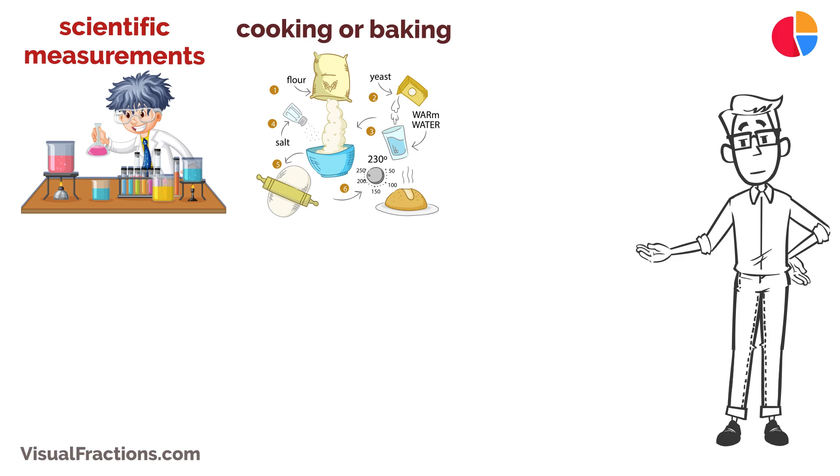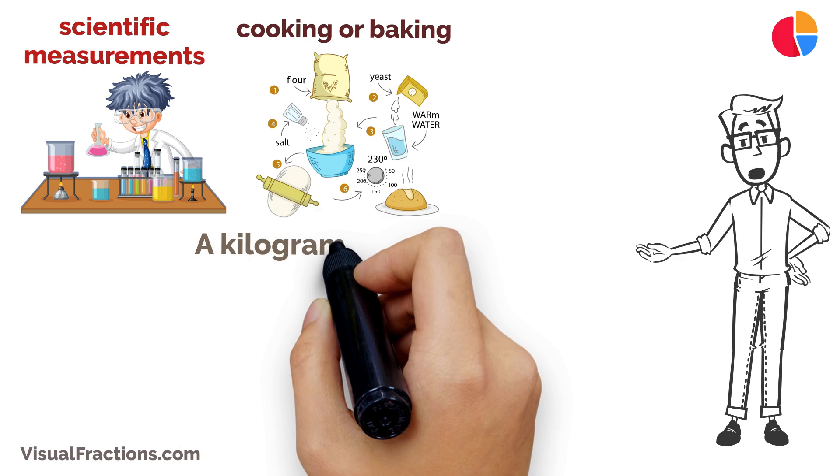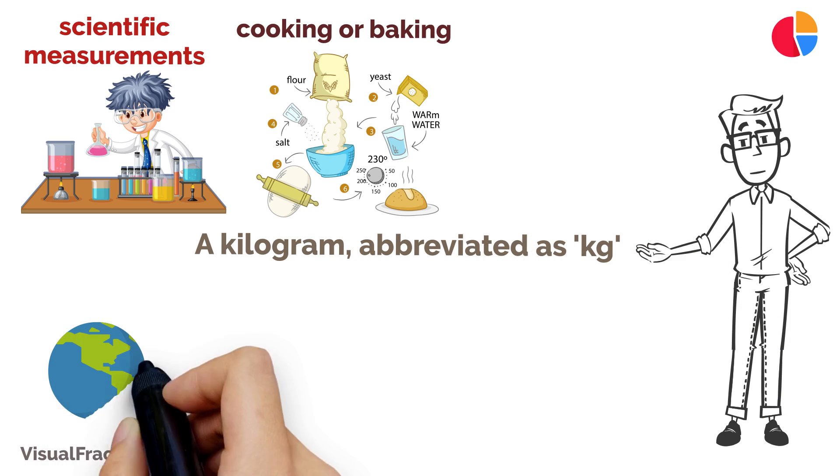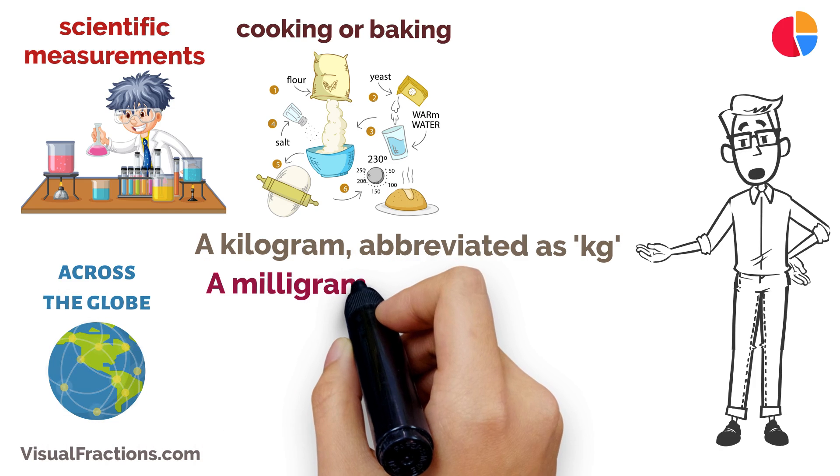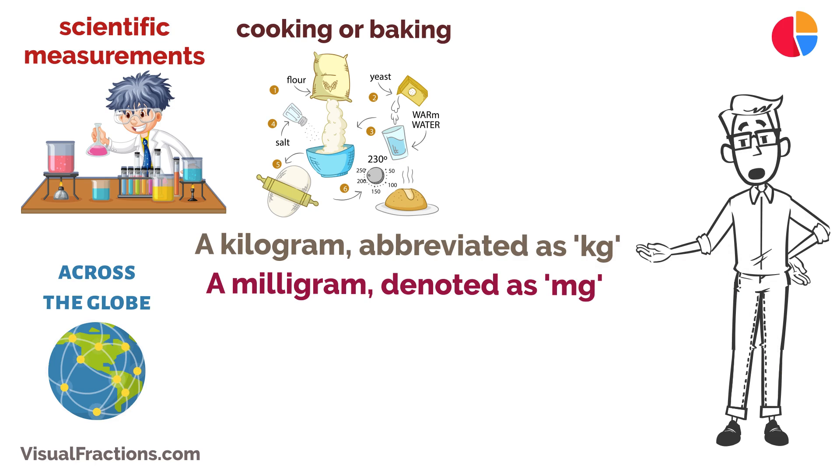Let's get to the basics. A kilogram, abbreviated as kg, is a unit of mass that's commonly used across the globe. A milligram, denoted as mg, is a much smaller unit of mass.